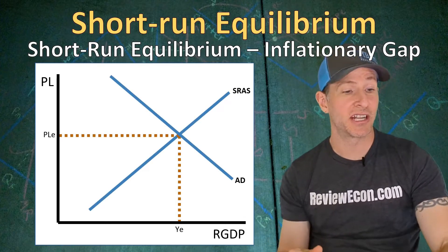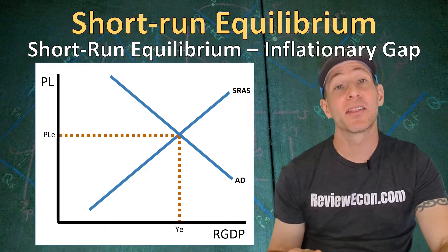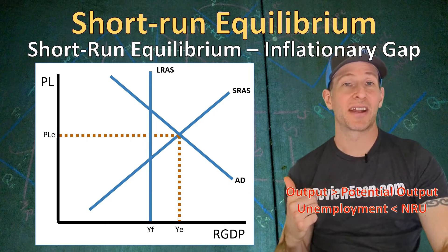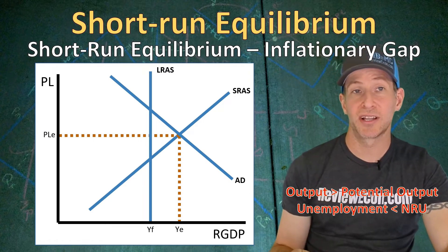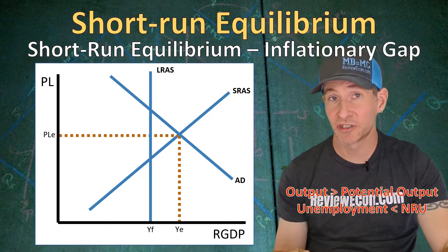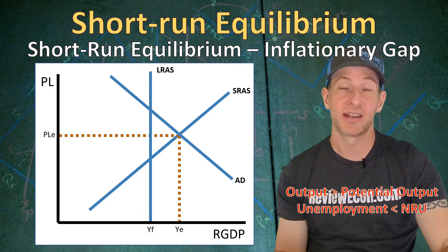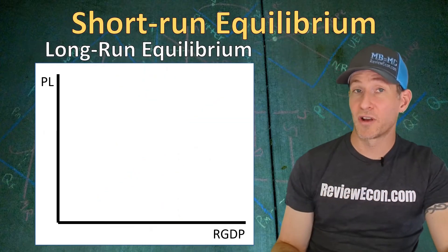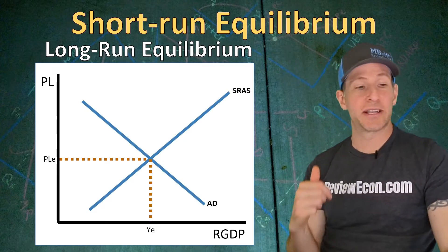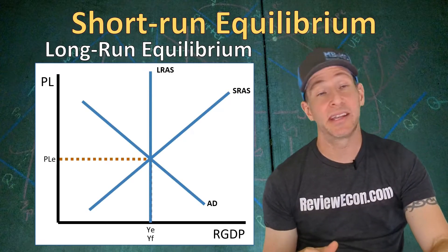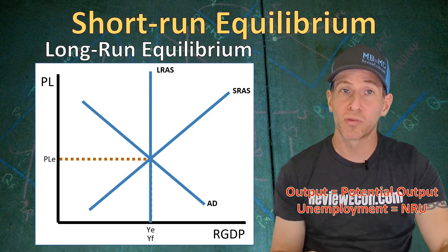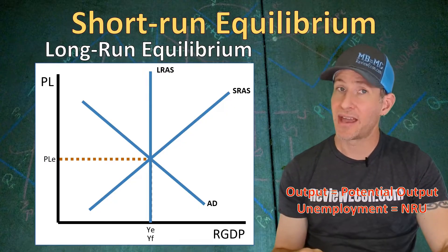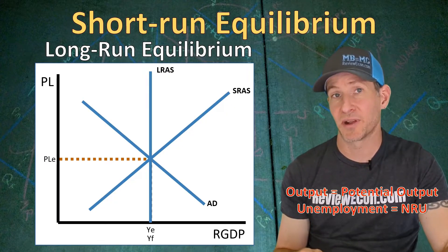This is a recessionary gap in short-run equilibrium. If we want to graph out a short-run equilibrium with an inflationary gap, we have our current level of real GDP output to the right, and the long-run aggregate supply curve is going to be to the left of the current level of output. That means our current level of output is greater than our potential real GDP output — the amount we can produce in the long run — and the unemployment rate will be less than the natural rate. But in the long run, all three curves will intersect, meaning the current level of output equals the long-run potential output: YE equals YF, which occurs when the current unemployment rate equals the natural rate of unemployment.